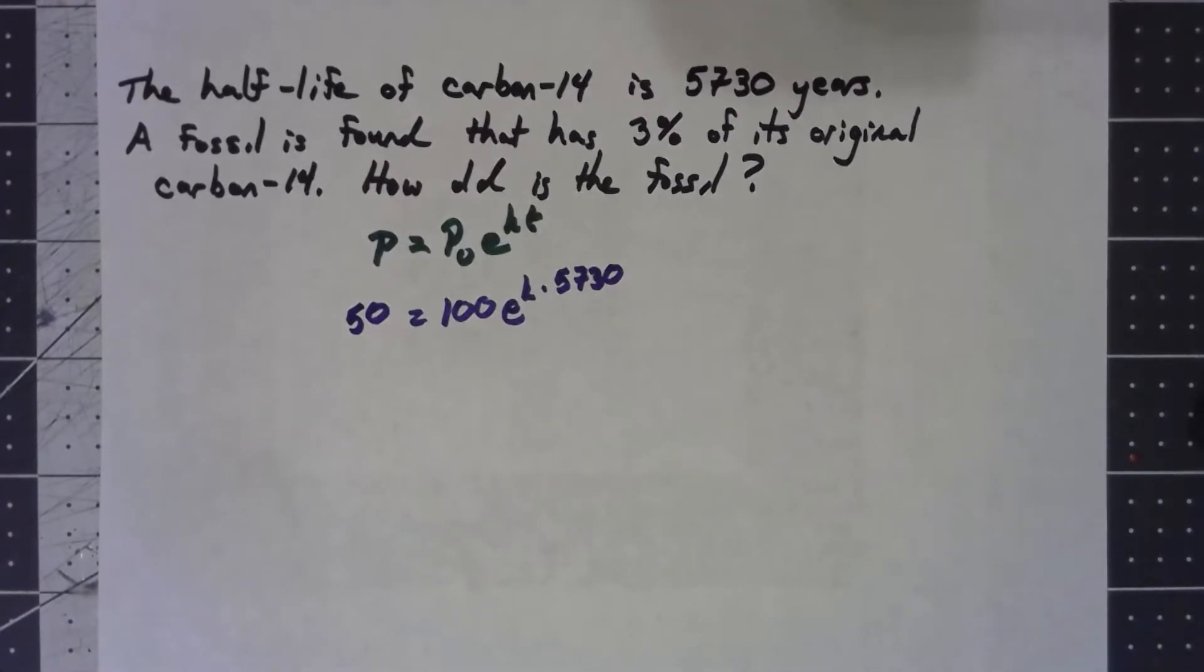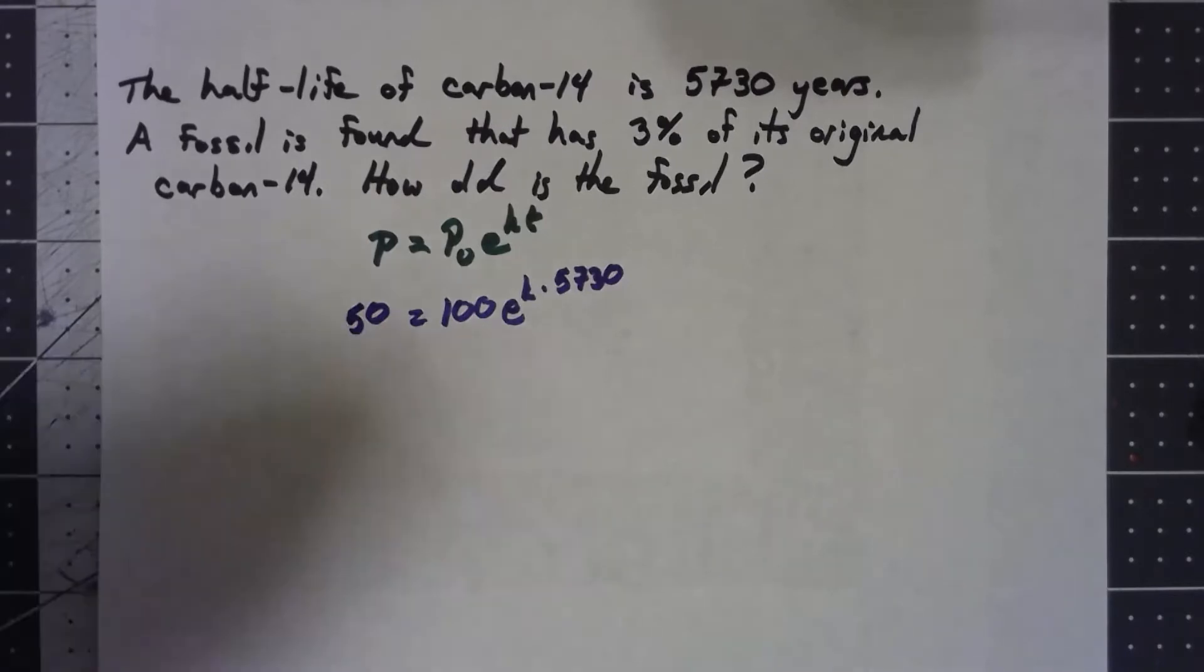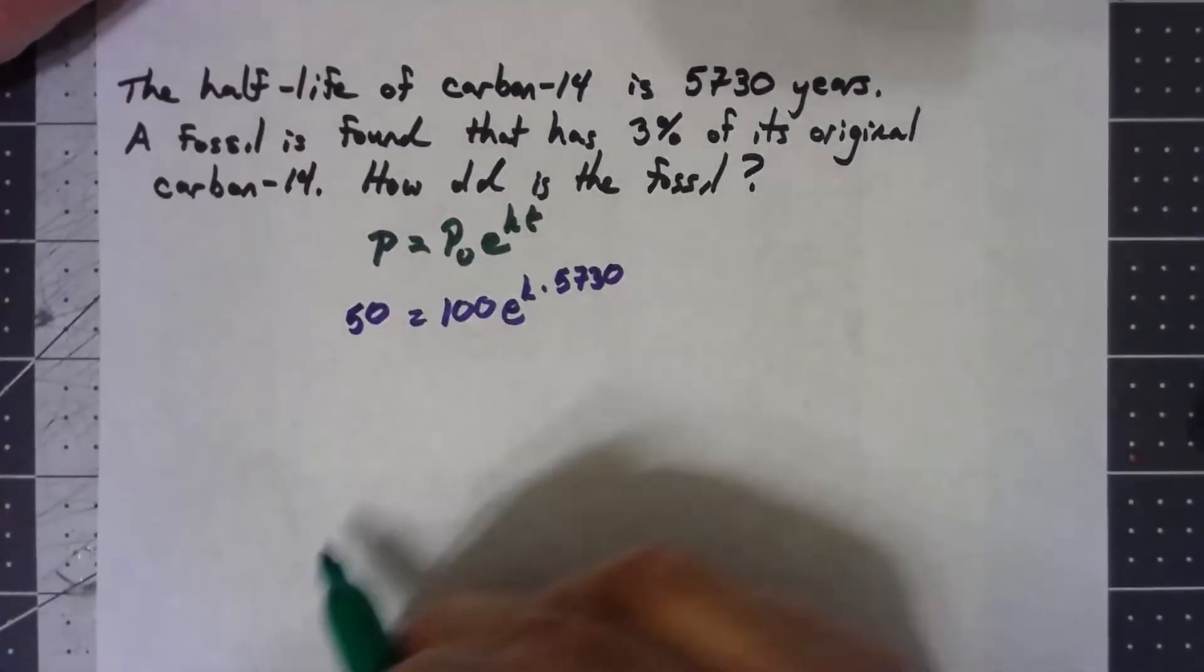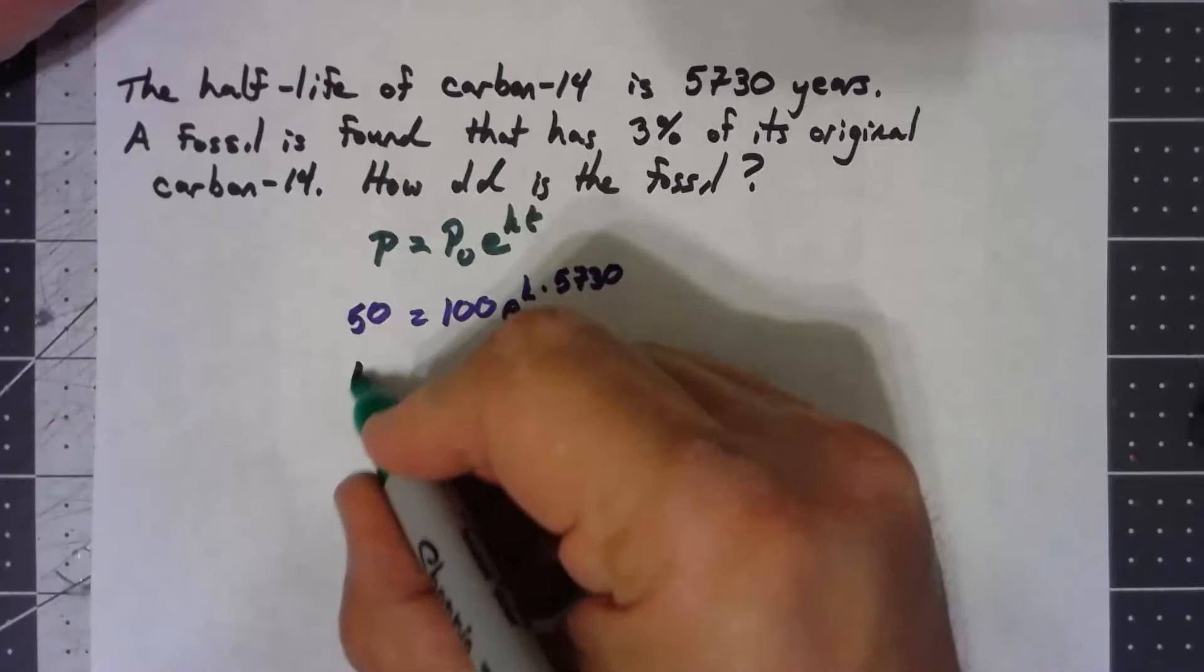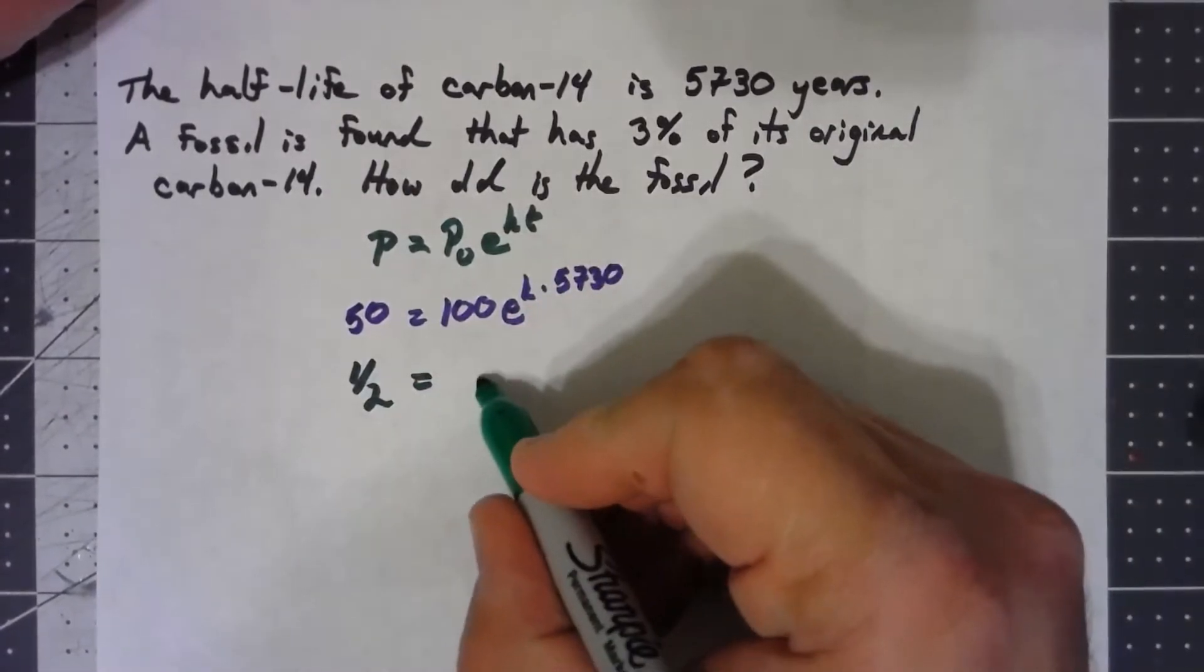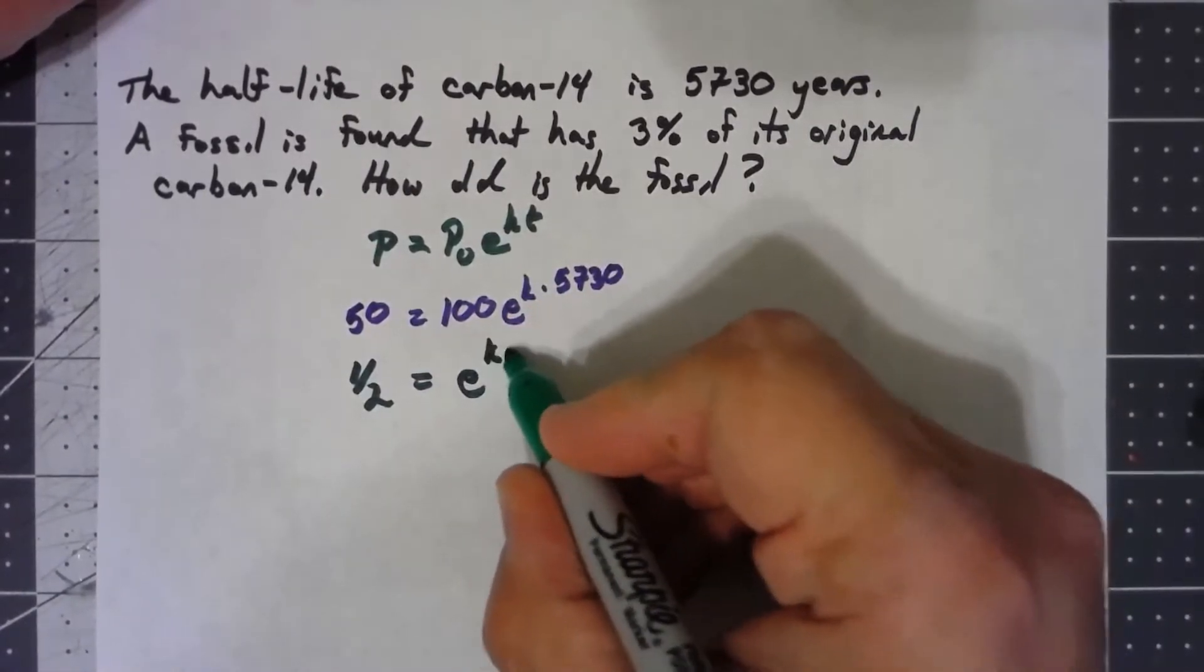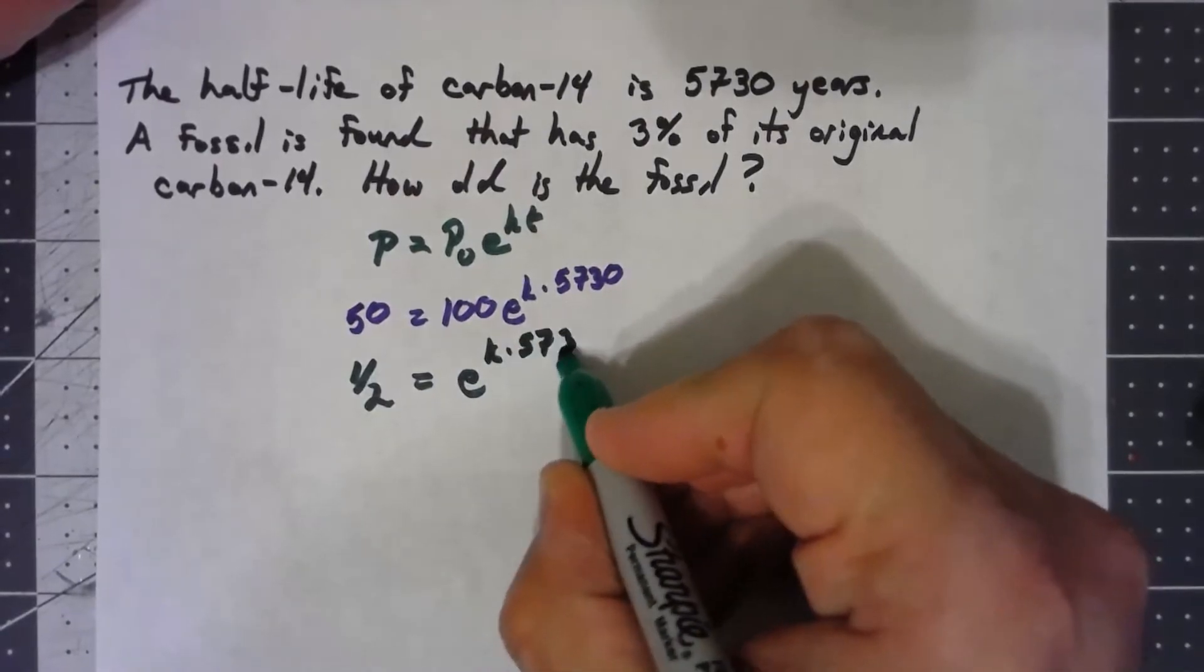So just like in the last problem, we've got to go ahead and figure out what K is. I can divide by 100 and 50 over 100 would give me one-half is equal to e to the K times 5730.